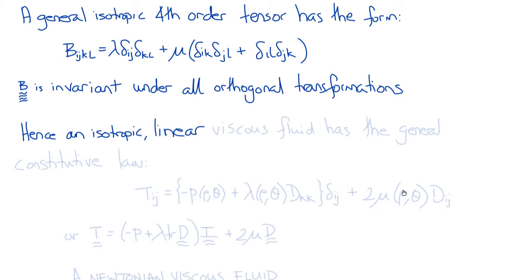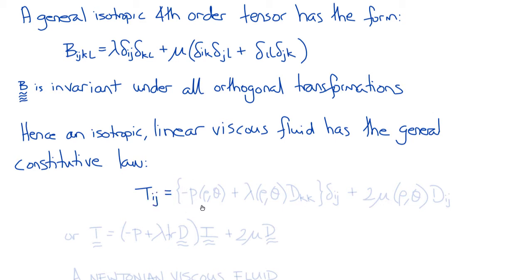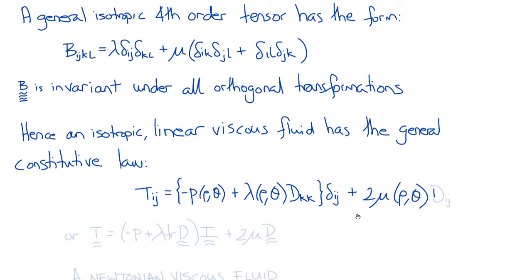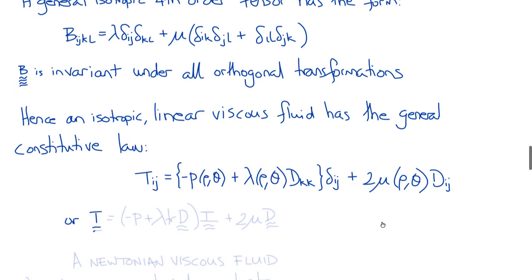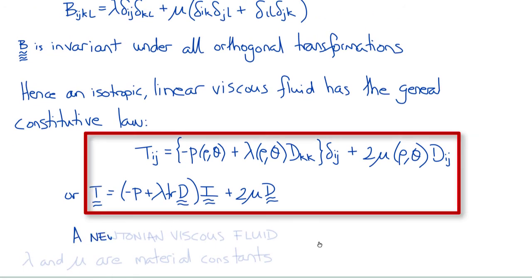What that means is that we have reduced the number of independent constants in the fourth-order tensor from 36 to 2: lambda and mu. Going back to our constitutive equation, substituting this form of B_ijkl gives: T_ij equals minus p(rho, theta) plus lambda(rho, theta) times D_kk times delta_ij plus 2 mu(rho, theta) times D_ij. Or in direct notation: T equals (minus p plus lambda times tr(D)) times I plus 2 mu times D. This is the equation for a Newtonian viscous fluid, where lambda and mu are the two material constants describing the physical properties of the fluid.